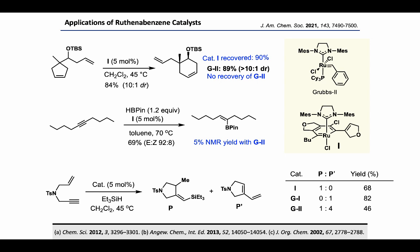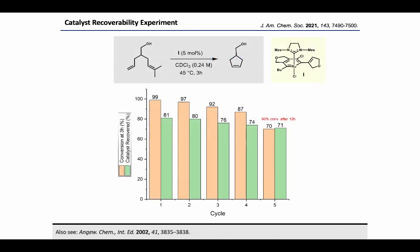Enynes participated in an interesting hydrosilylation-cyclization reaction in the presence of triethylsilane, although Grubbs 1 and Grubbs 2 lead to the normal enyne metathesis product. The exceptional catalyst recoverability of the ruthenobenzene complex was demonstrated for the RCM reaction, and the catalyst can be recycled over almost 5 cycles with high conversion at every cycle and good catalyst recoverability.